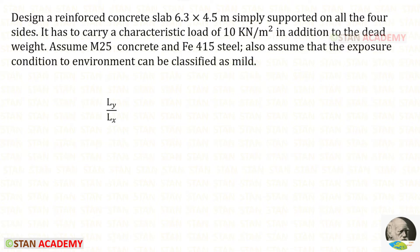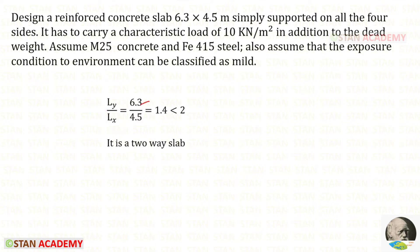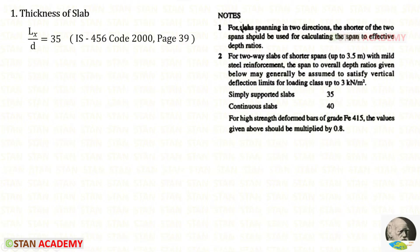First we have to check whether it is a two-way slab or one-way slab. For that we find the ratio Ly to Lx: 6.3 divided by 4.5 gives 1.4, which is less than 2. So it is a two-way slab. Now let us start designing.